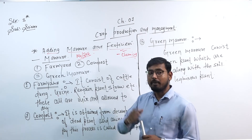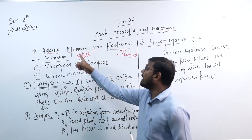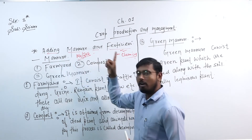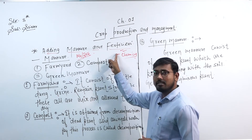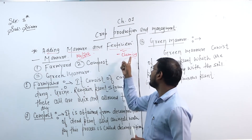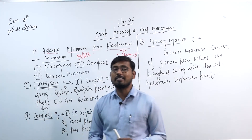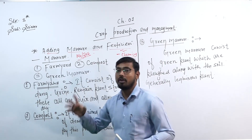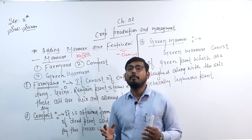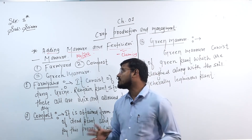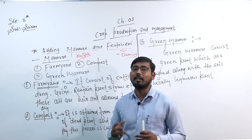This will be easy to remember: manure is organic, organic is obtained from nature; fertilizer is inorganic, inorganic is obtained from chemicals. Now we are going to discuss the types of manure. We have studied that adding manure and fertilizers increases soil fertility. The types of manure are: farmyard manure, compost, and green manure.